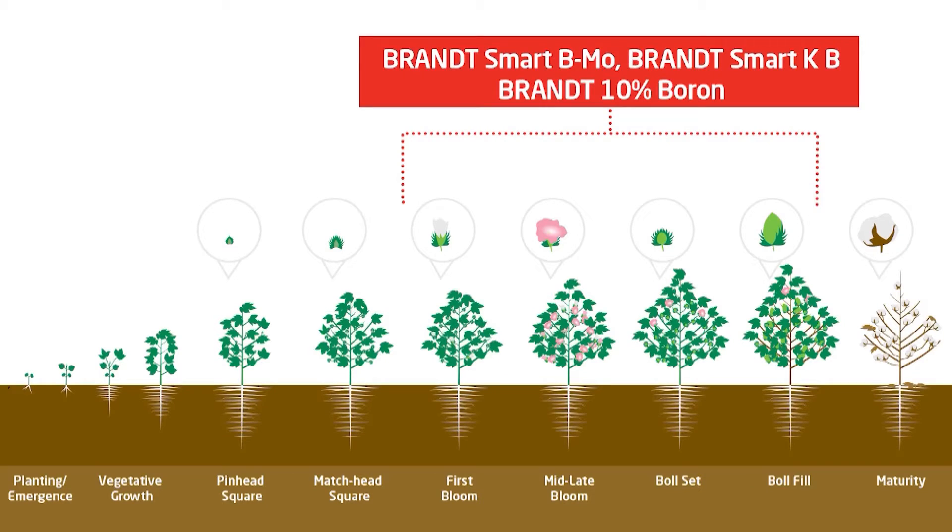You're talking about using foliar nutrition and one element that comes to mind that can impact both seed number, pod number, and seed weight would be boron. You were using Brant Smart KB. We used Smart B and Smart BMO through the vegetative stage and at planting. Then starting at R1, we swapped to the KB for the potassium acetate and the boron, and we used that heavily. That was a huge factor in the seed size — without a doubt in my mind.